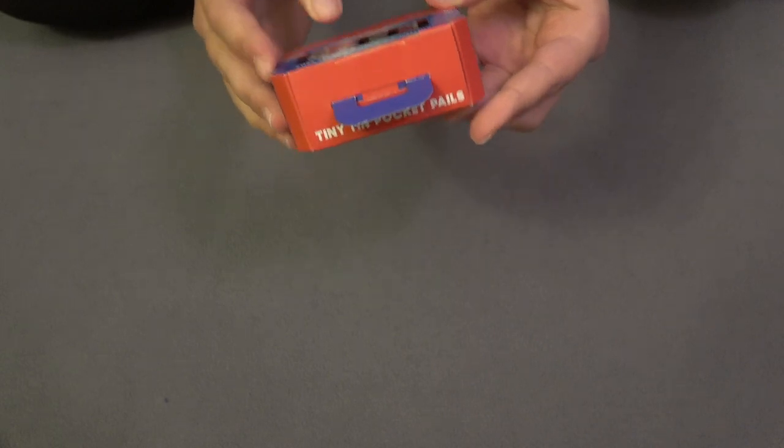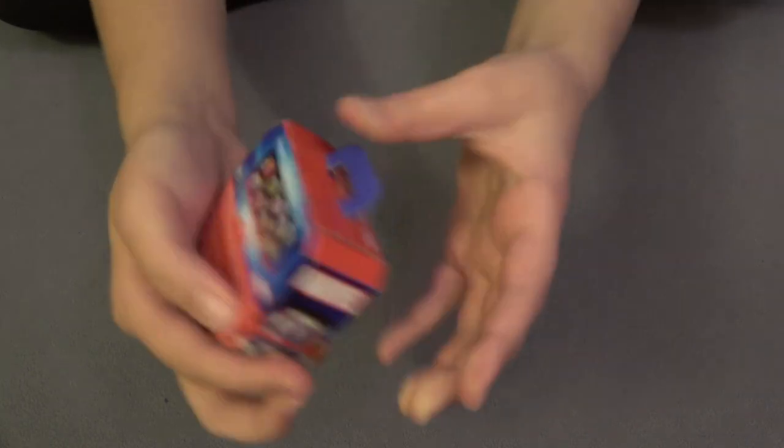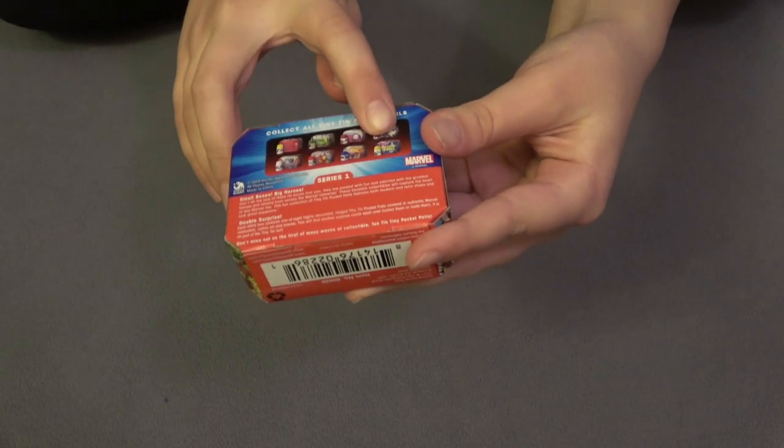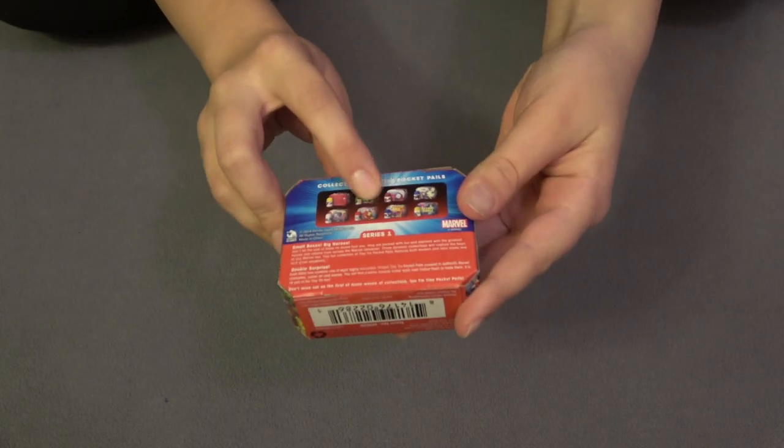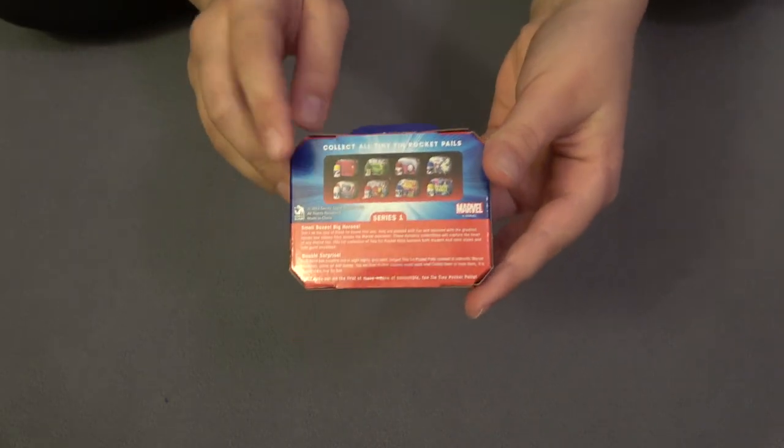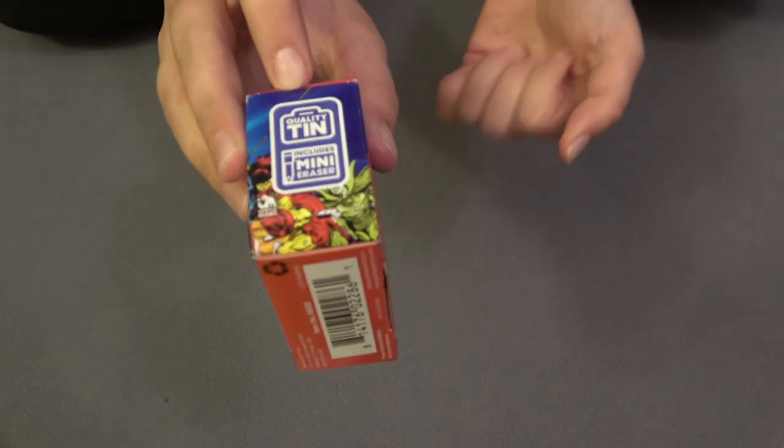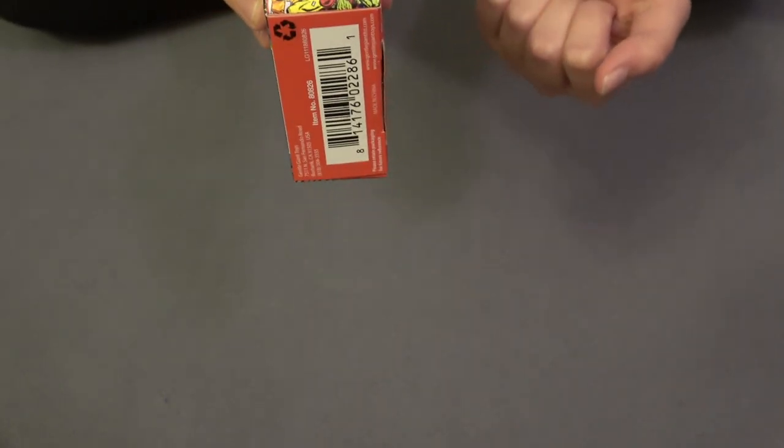On the back it shows you all the different kinds you can get. It looks like you can get Daredevil, Hulk, Ant-Man, Spider-Man, Doctor Strange, Black Panther, Iron Man and Captain America. And then on the side it just says quality tin includes mini eraser. So I say let's get right to it.